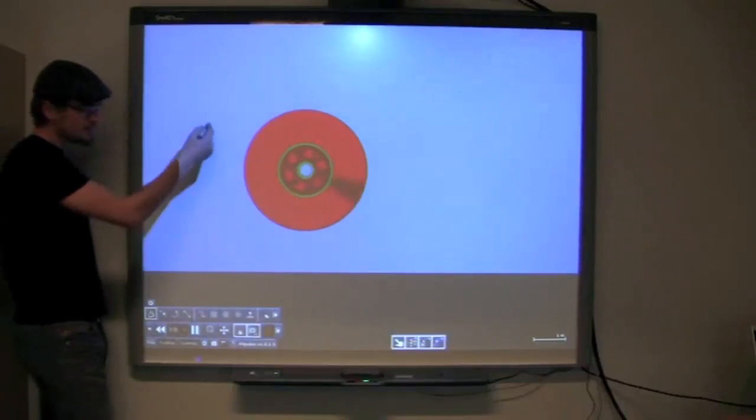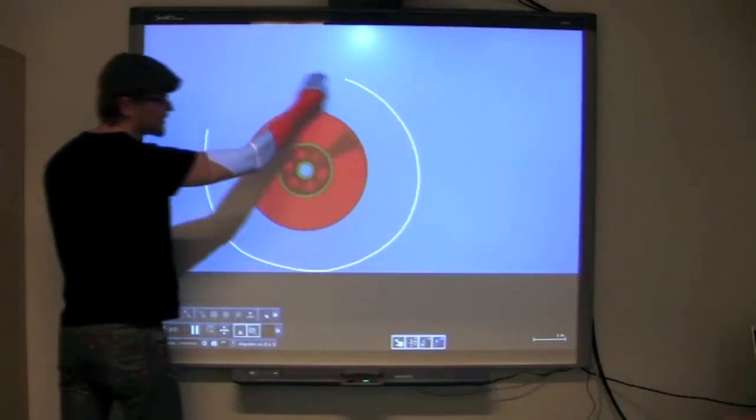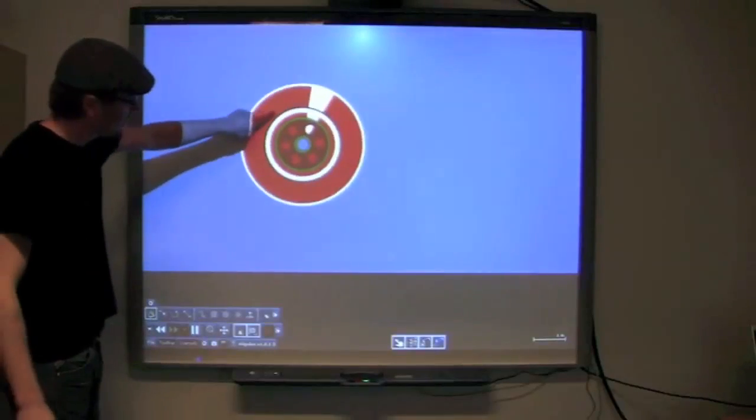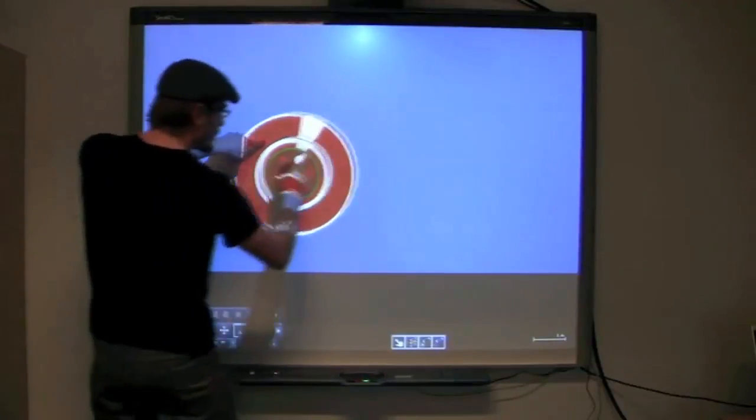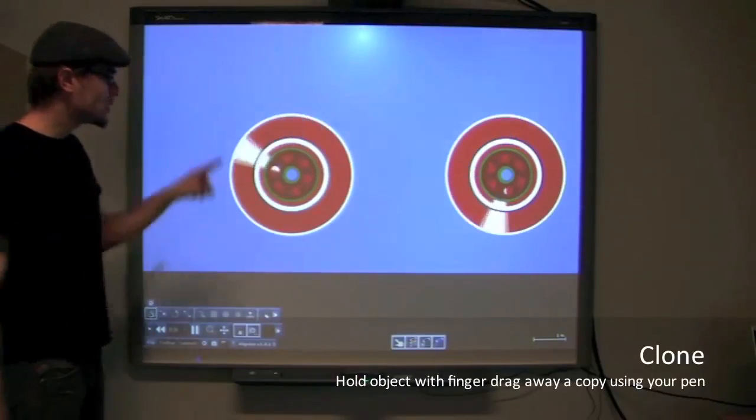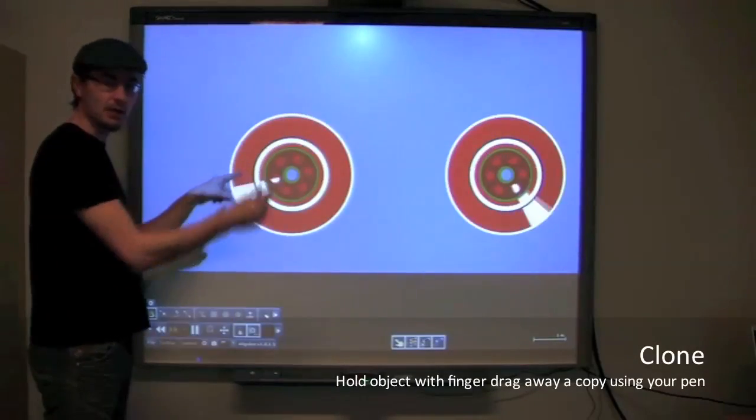Switching back to the sketch tool, select the wheel by just encircling it like that. Press your finger and hold it and then drag away a copy using the pen. So that's holding down with the finger and dragging with a pen.